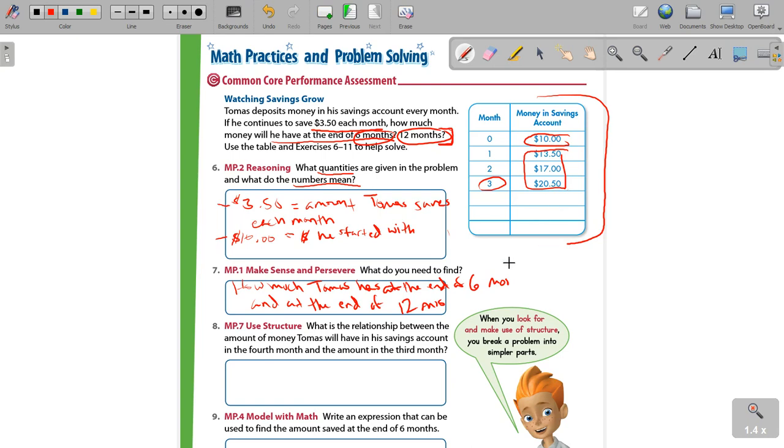$3.50 a month. And we are now, we're looking to the future. We're seeing what he has next. What is the relationship between the amount of money Tomas will have in his savings account in the fourth month and the amount in the third month? Well, what you write here might vary, but what I would say is that he's going to have $3.50 more saved in the fourth month than he had in the third month. That's probably the simplest way to say this.